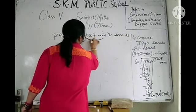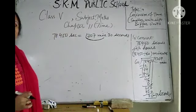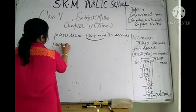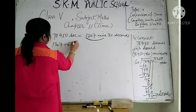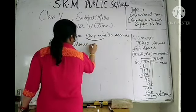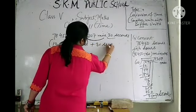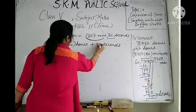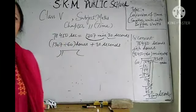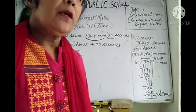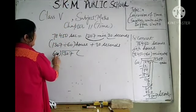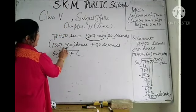Now these minutes will be converted into hours by dividing by 60. As soon as you divide by 60, the minutes will be converted into hours, and the 30 seconds you will take as it is. So divide 1307 by 60 and you will get the time in hours.